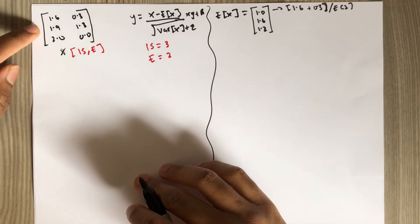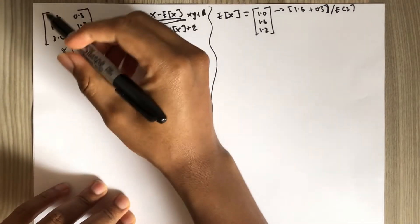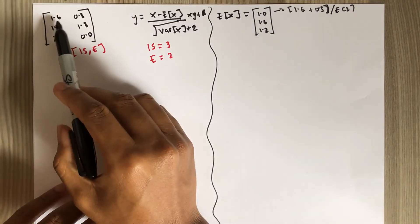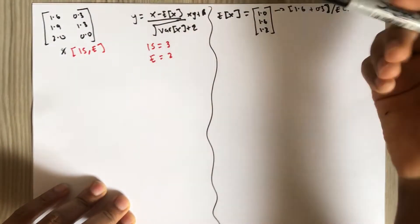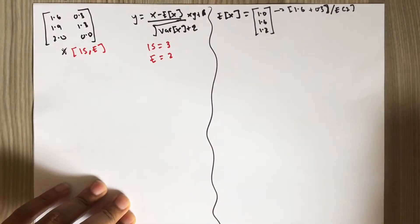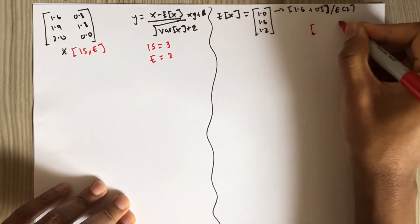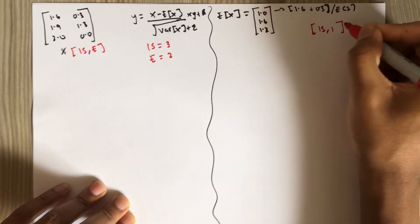So unlike in batch normalization, where the mean is calculated across different dimensions of the features, here it is calculated across different training examples. So if it was in batch normalization, the dimension will be output dimension will be e, but here it is is by 1.